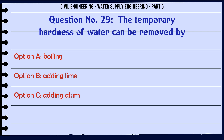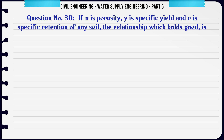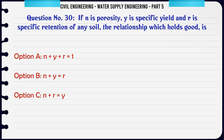The temporary hardness of water can be removed by: A. Boiling, B. Adding lime, C. Adding alum, D. Filtration. The correct answer is Boiling.